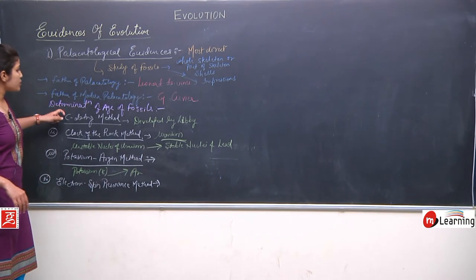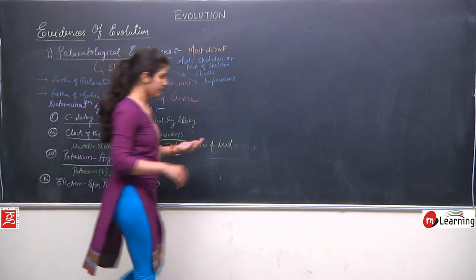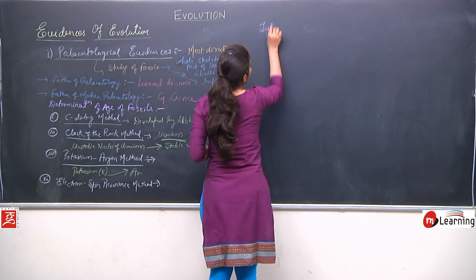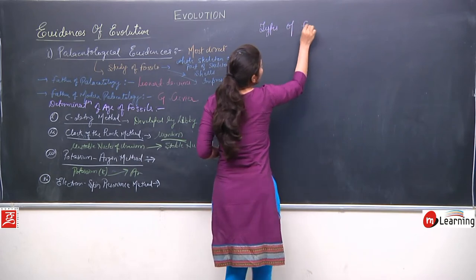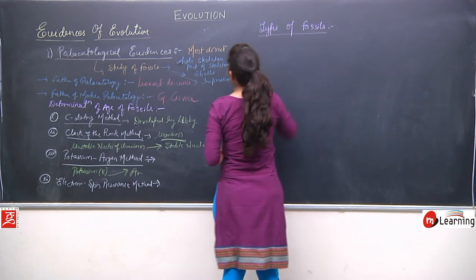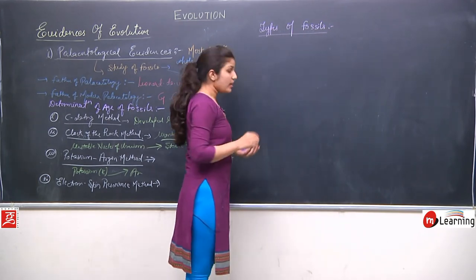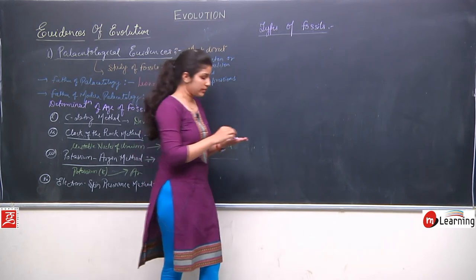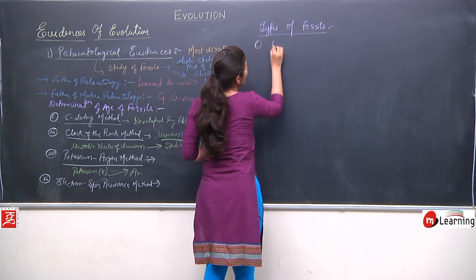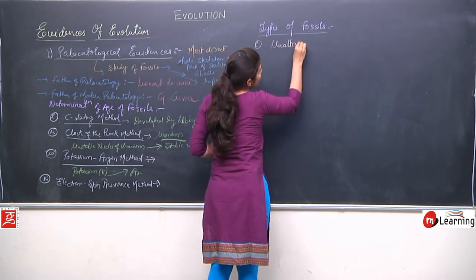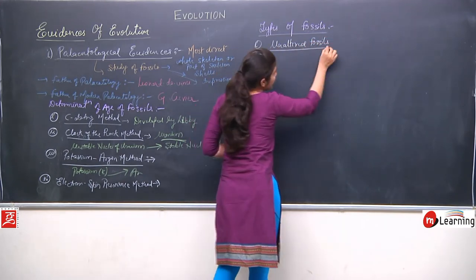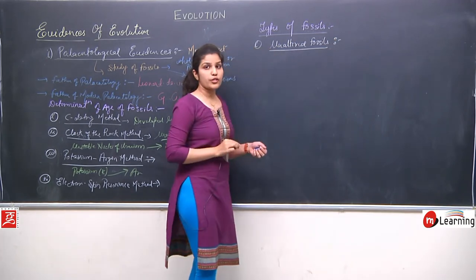These are some methods for determination of the age of fossils. Let us now discuss the types of fossils. The first type is unaltered fossils.